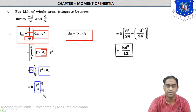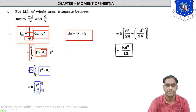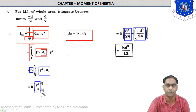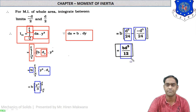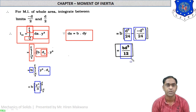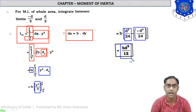With the limit from minus d/2 to plus d/2, replacing the upper limit gives d cubed by 8 divided by 3, which equals d cubed by 24. The lower limit also gives minus d cubed by 24. Since minus times minus gives plus, the final answer is b times d cubed by 12. So Ixx equals bd³/12.